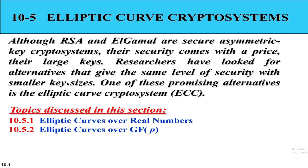So till now we have understood about RSA and ElGamal cryptosystems. Although those cryptosystems are secure, their security comes with a price. Elliptic curve cryptography is another asymmetric key or public key cryptography which provides equal security with a smaller key size. If we compare elliptic curve cryptography with RSA or any other non-elliptic cryptography, we can easily see that it achieves the same level of security with a smaller key size, and this is a very important topic.